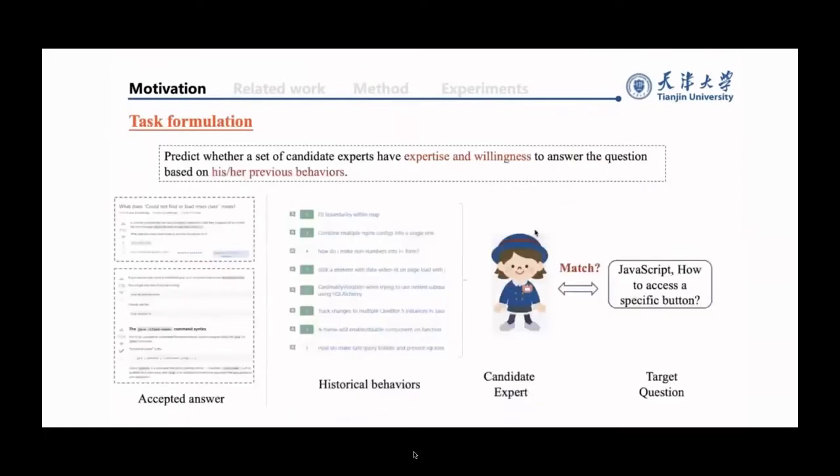Let's talk about the task formulation of expert finding. From the left figure, we can find the second answer is the accepted answer for the question. The provider of the accepted answer for the question is the expert. It is noted that the accepted answer is designated by the person who raises the question, and there is only one accepted answer for each question.